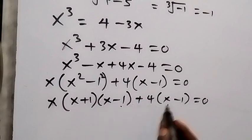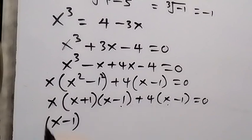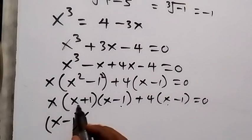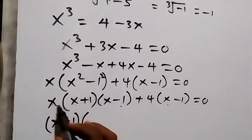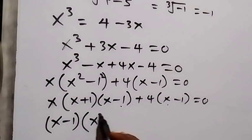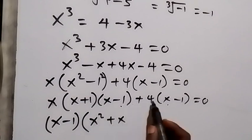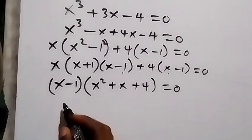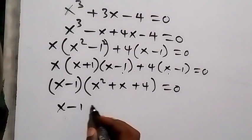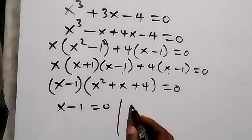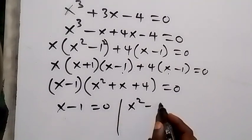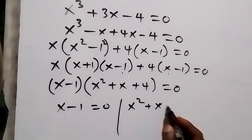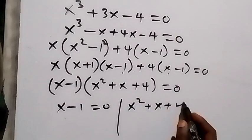Factoring out (x − 1), we have (x − 1)[(x + 1) + 4] = (x − 1)(x² + x + 4) = 0. This gives two possible cases: x − 1 = 0 or x² + x + 4 = 0.